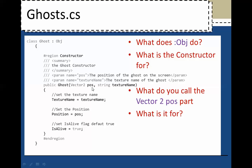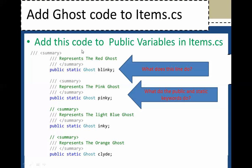Add this code to the public variables and items. We're going from the ghost to items.cs. What does this line do? Tell me what public static ghost blinky does and what does the public static keyword do.